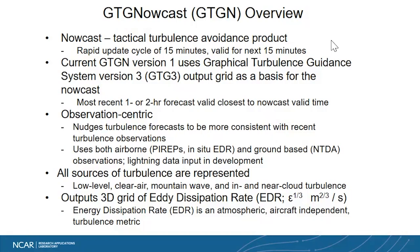GDGN, the Nowcast, produces one Turbulence Nowcast output that comprises all sources of turbulence. That means low-level turbulence, clear-air turbulence, mountain wave turbulence, and also in and near-cloud turbulence.